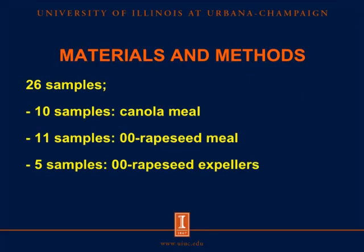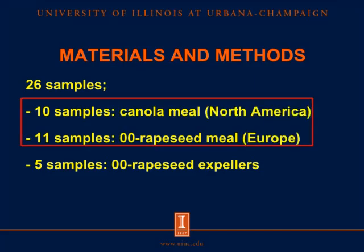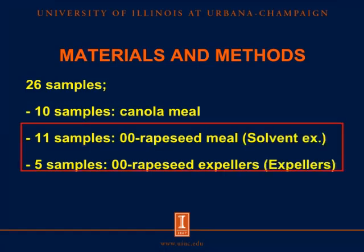We had 26 samples of canola and rapeseed products: 10 samples were canola meal, 11 samples were 00 rapeseed meal, and 5 samples were 00 rapeseed expellers. We wanted to compare chemical composition of canola meal and 00 rapeseed meal from different locations, so we compared canola meal from North America with 00 rapeseed meal from Europe. We also wanted to compare chemical composition of 00 rapeseed meal and 00 rapeseed expellers from different oil extraction procedures, so we compared 00 rapeseed meal from solvent extraction with 00 rapeseed expellers from expeller extraction procedures.